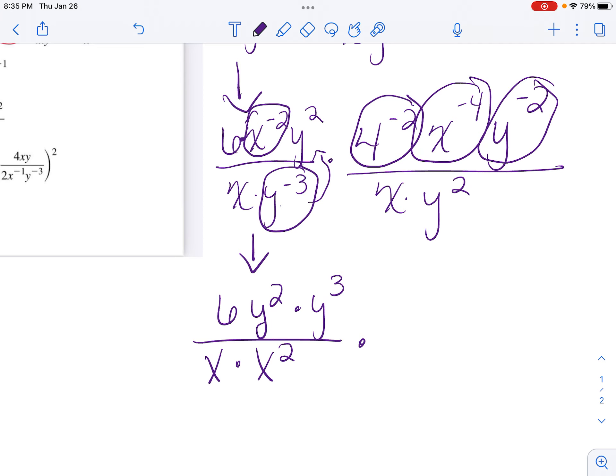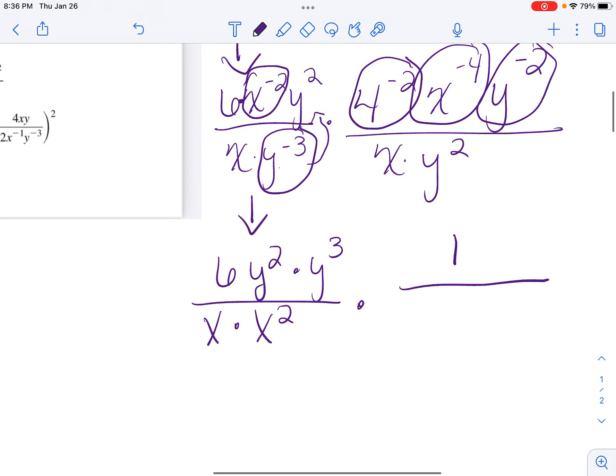I notice on the next one, all of those are going to go below. So it's going to leave me a 1 on top, and I'm going to bring 4 to the 2nd. And then I'm going to have x to the 4th, y to the 2nd. Then I'm going to multiply in the x and y that are already on the bottom.